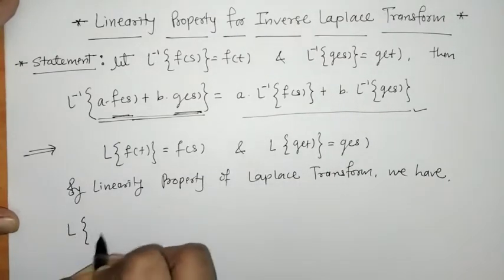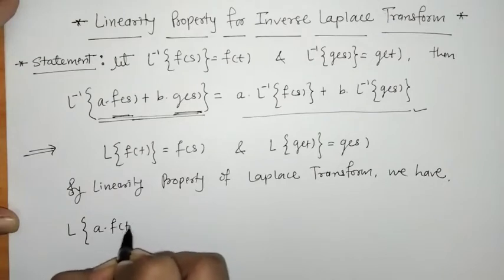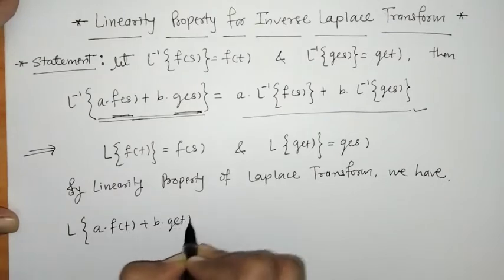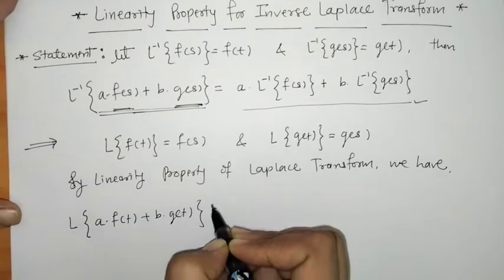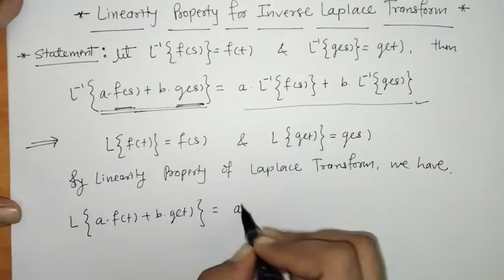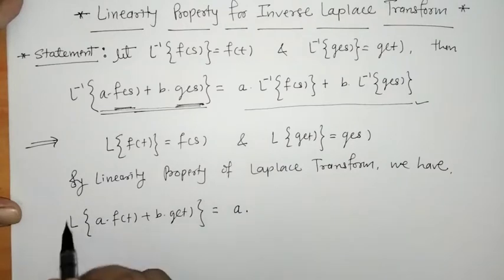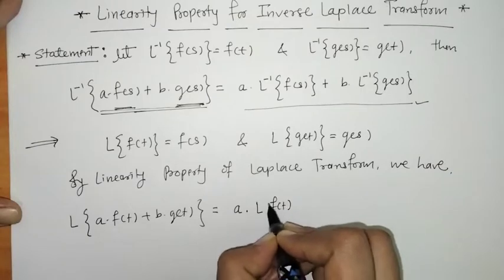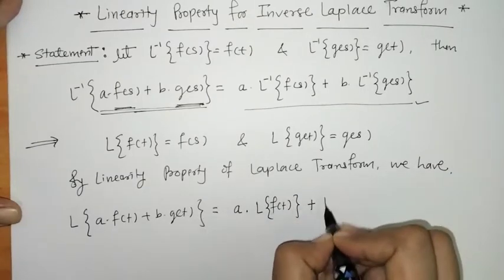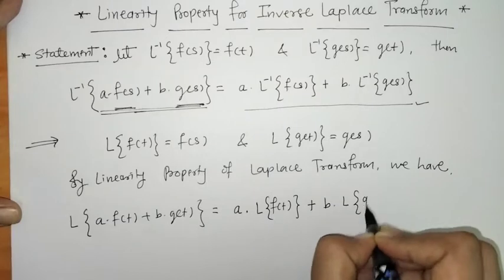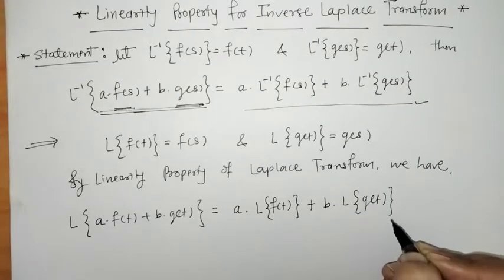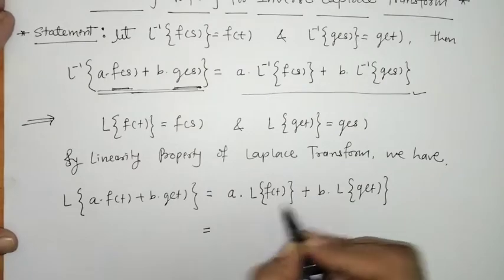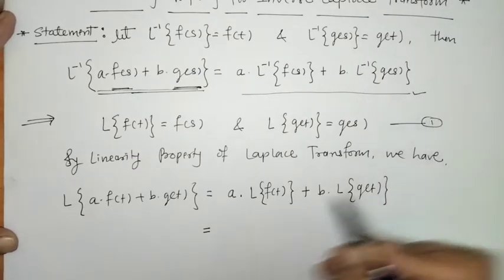that L{a·f(t) + b·g(t)} equals a·L{f(t)} + b·L{g(t)}, since we distribute the Laplace operator L over f(t) and g(t).